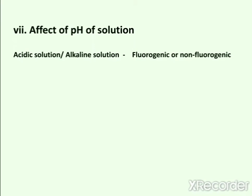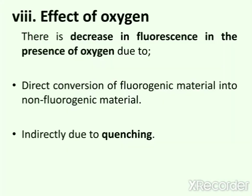Next is the pH of solution. The pH of solution also affects the fluorescence intensity. As we know, pH decides whether a substance will be in ionized form or unionized form.